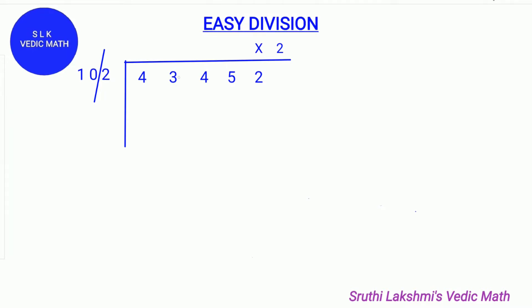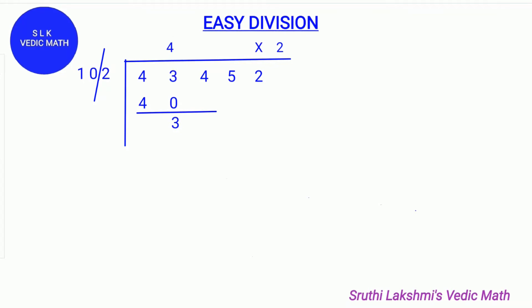First find how many tens can fit in 43. Four tens can fit in 43, so write down 4 in the quotient line. Then do 10 times 4, which is 40, and write 40 below 43. Next do 43 minus 40, which is 3.